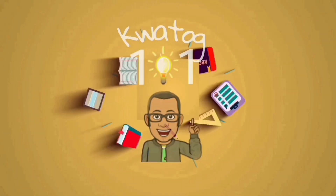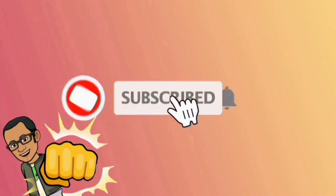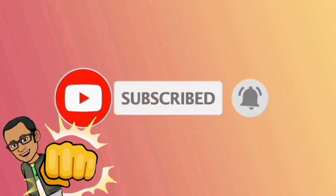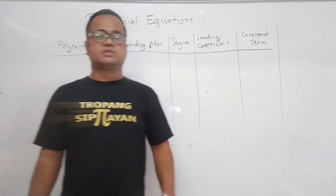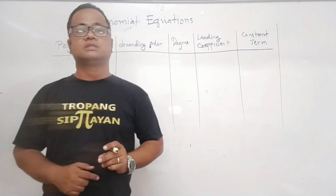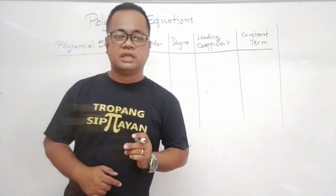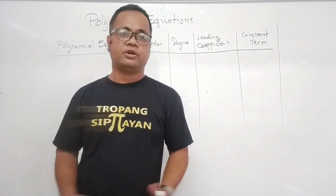Hi guys, I'm Oliver from Quatog101 and welcome to my channel. So, how can we determine the degree of polynomials, the leading coefficient, and the constant term given the polynomial equation?